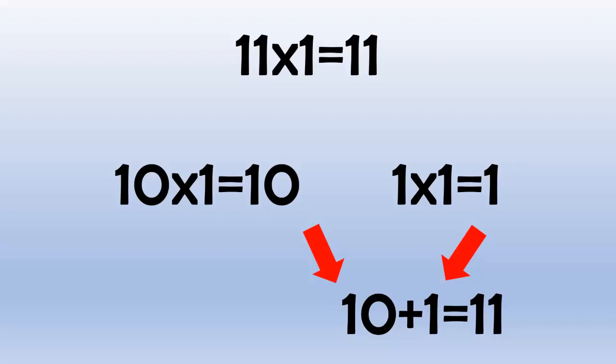11 times 2 equals 22, because 10 times 2 equals 20, and 1 times 2 equals 2, and 20 plus 2 equals 22.